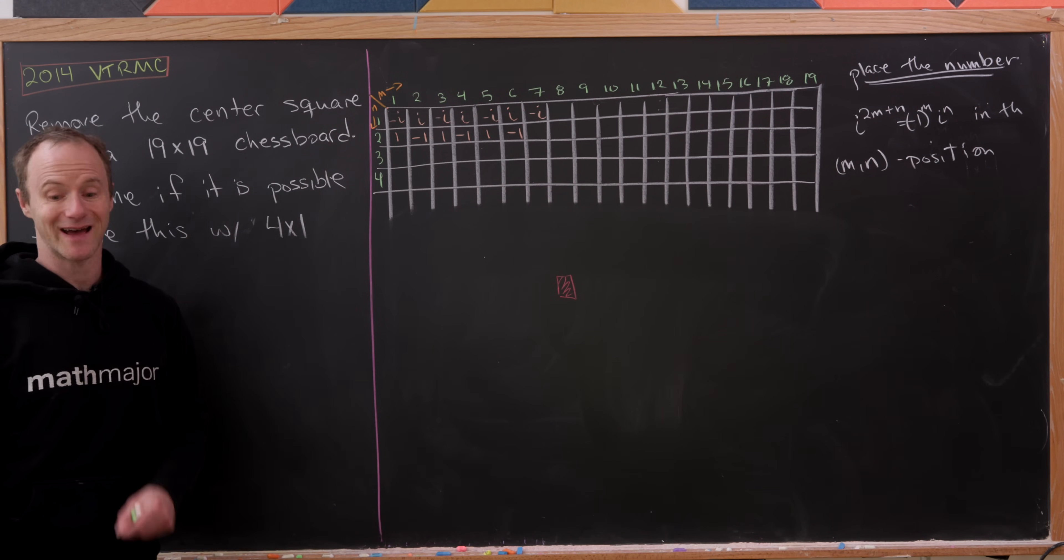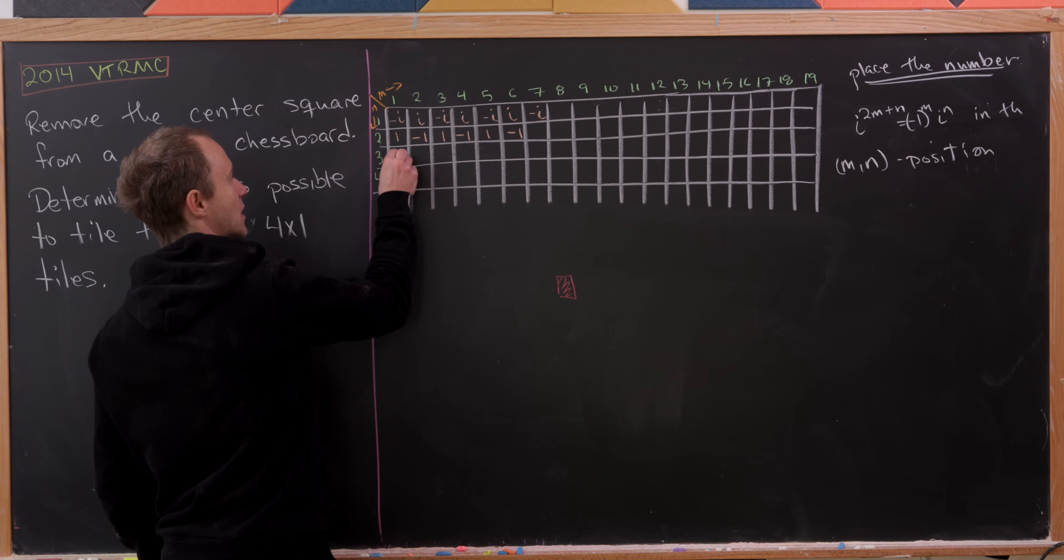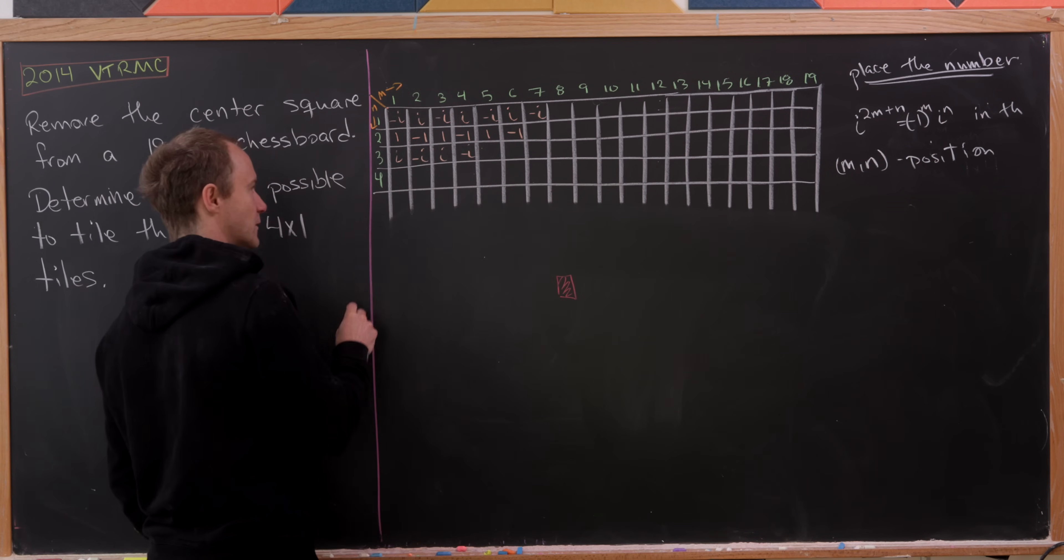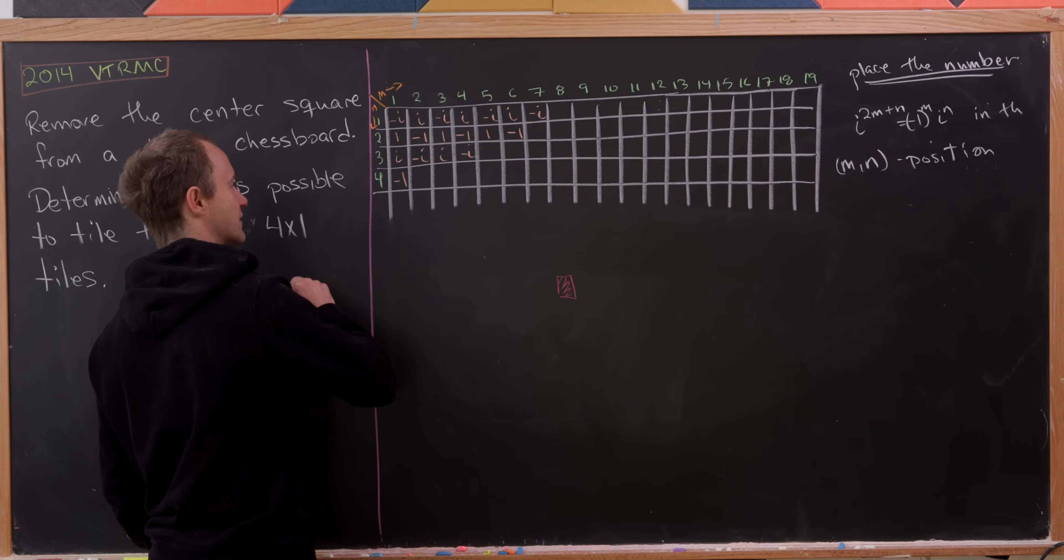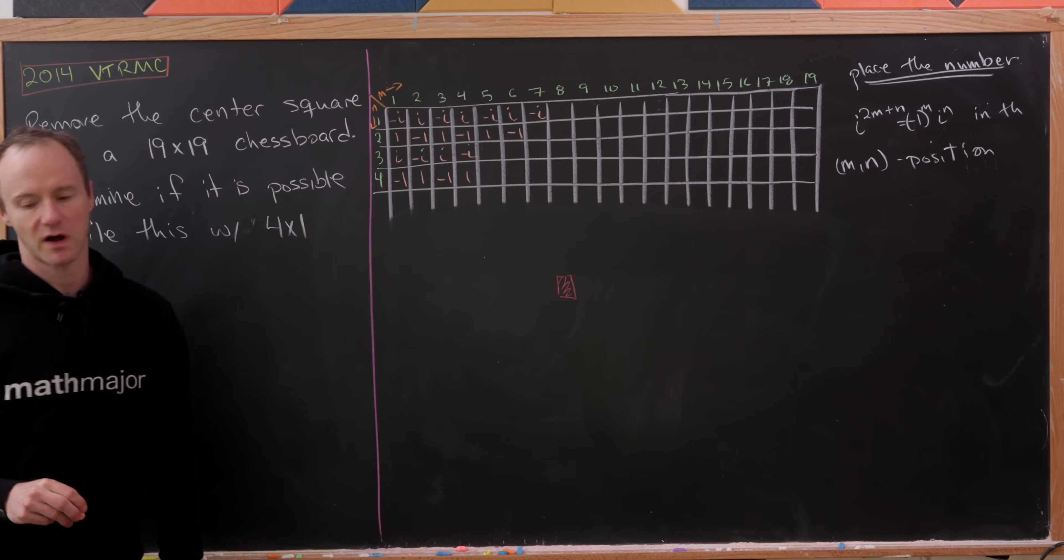And then in the third row, based off of that rule, we're going to again be alternating i's and minus i's. But now we start with an i. So we've got i, minus i, i, minus i, and so on and so forth. And then similarly down here, we're going to have negative 1, 1, negative 1, 1, and so on and so forth.